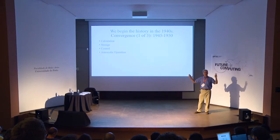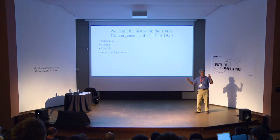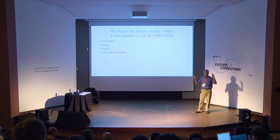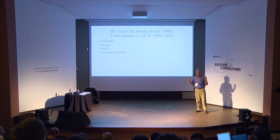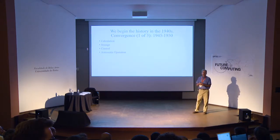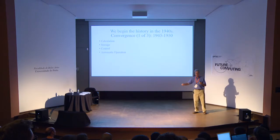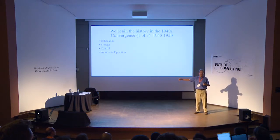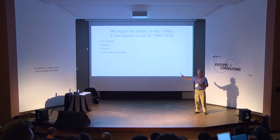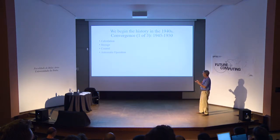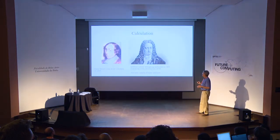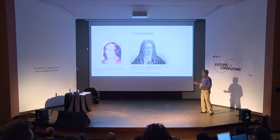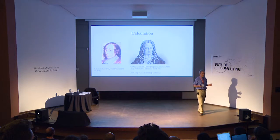Computers are automatic — they don't just do a calculation, they do a sequence of calculations automatically. The word 'computer' is a historical accident. It came from a 1940s project where a machine was built to replace human beings who were called 'computers' — that was their job title, carrying out simple arithmetic operations on paper. When the machine was built to speed up that process, they called it a computer, not a calculator.